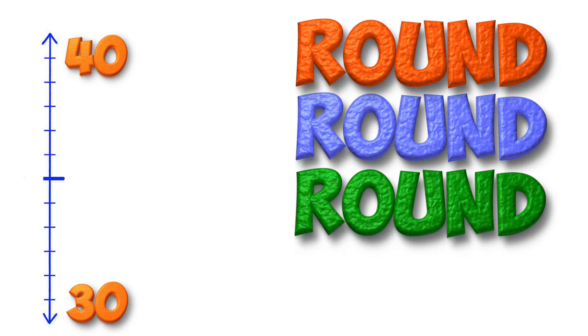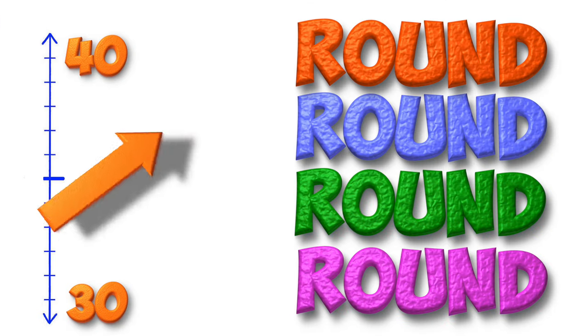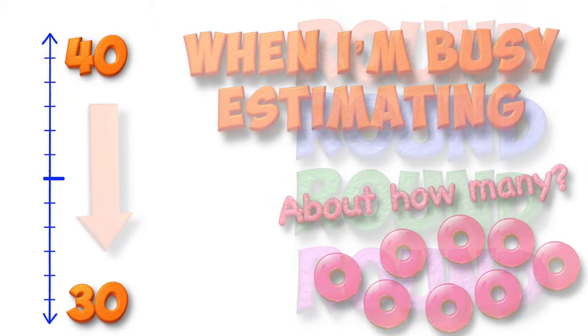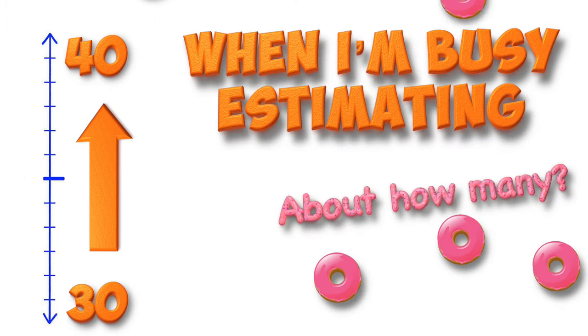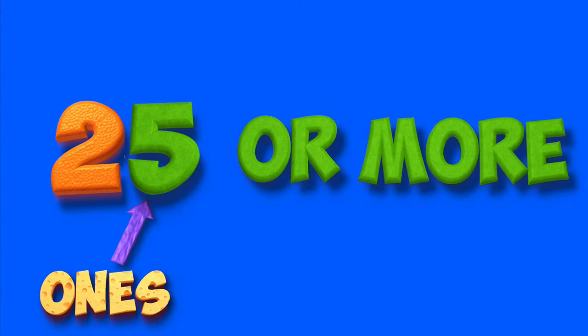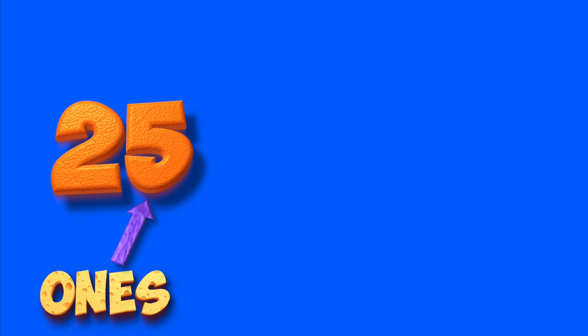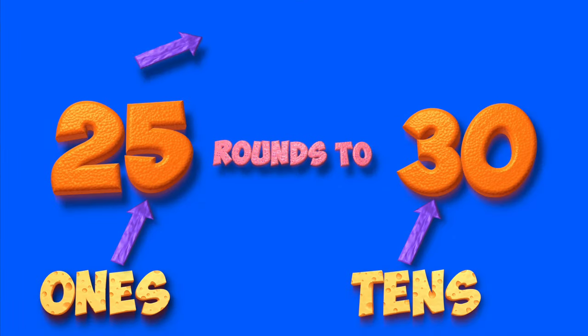Round, round, round and round. I'm rounding up or rounding down. When I'm busy estimating, I'm rounding up or rounding down. If you see five or more in the ones place — 5, 6, 7, 8, 9 — if you see five or more in the ones place, it rounds to the next ten every time.